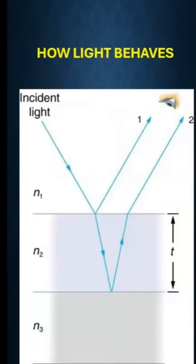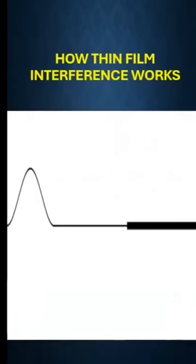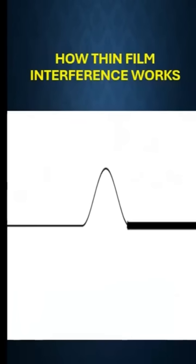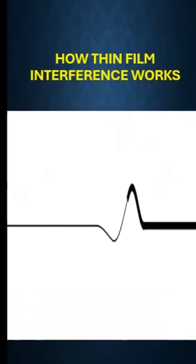Thin film interference occurs when light waves reflect from both the top and bottom surfaces of a thin film. When a wave, as in wave 1, moves from a rarer medium to a denser medium, the reflected wave is 180 degrees out of phase.